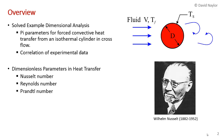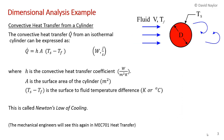I'll talk about how these pi parameters greatly aid in correlating experimental data, and how the analysis results in some famous dimensionless parameters in heat transfer: the Nusselt number after Wilhelm Nusselt, the Reynolds number you've already seen, and the Prandtl number. At this point, you're not responsible for the theory here — this is not a course in heat transfer. Mechanical engineers will get a course in heat transfer next term.